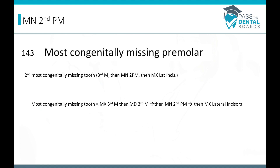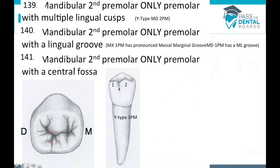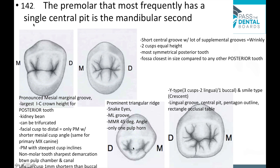The mandibular second premolar is the most congenitally missing premolar, but not the most congenitally missing tooth overall. It is the second most congenitally missing tooth: the order is third molars first, then mandibular second premolar, then maxillary lateral incisors. More specifically: maxillary third molar, then mandibular third molar, then mandibular second premolar, then maxillary lateral incisor. The premolar that most frequently has a central pit is the mandibular second premolar — it has a single central pit but three pits in total.